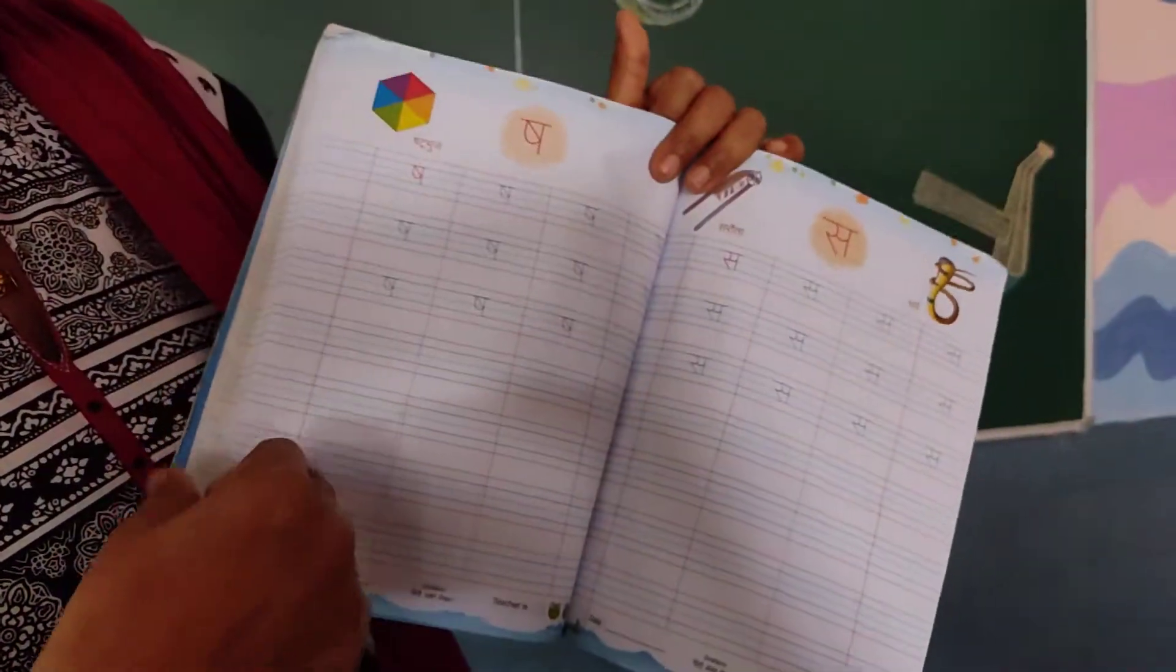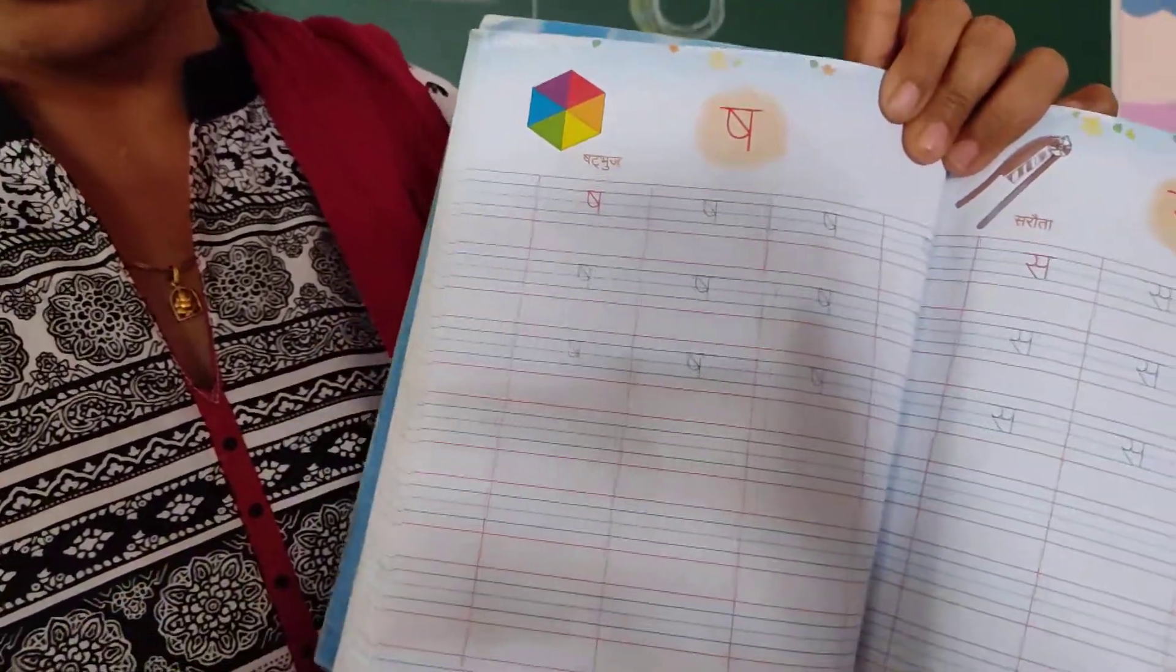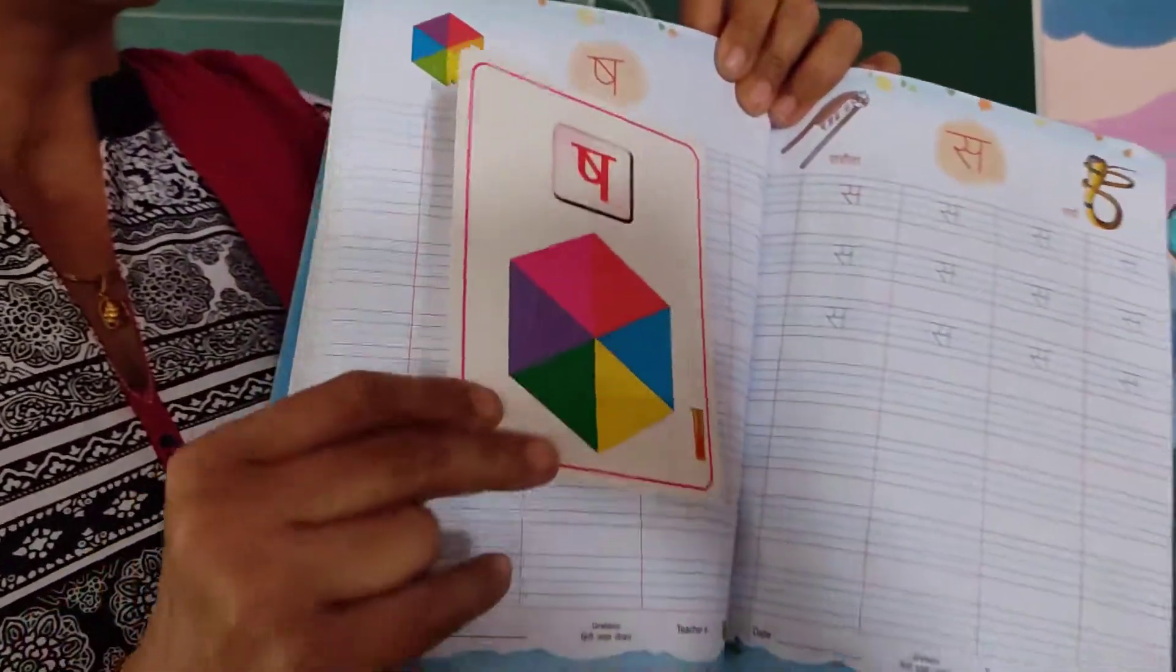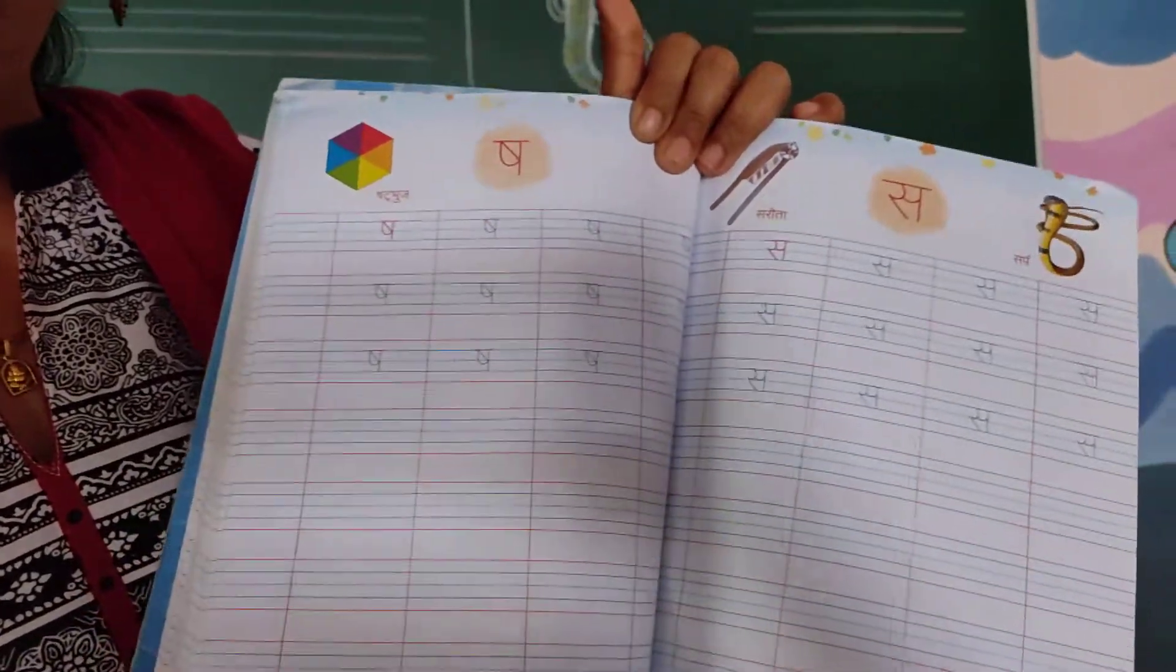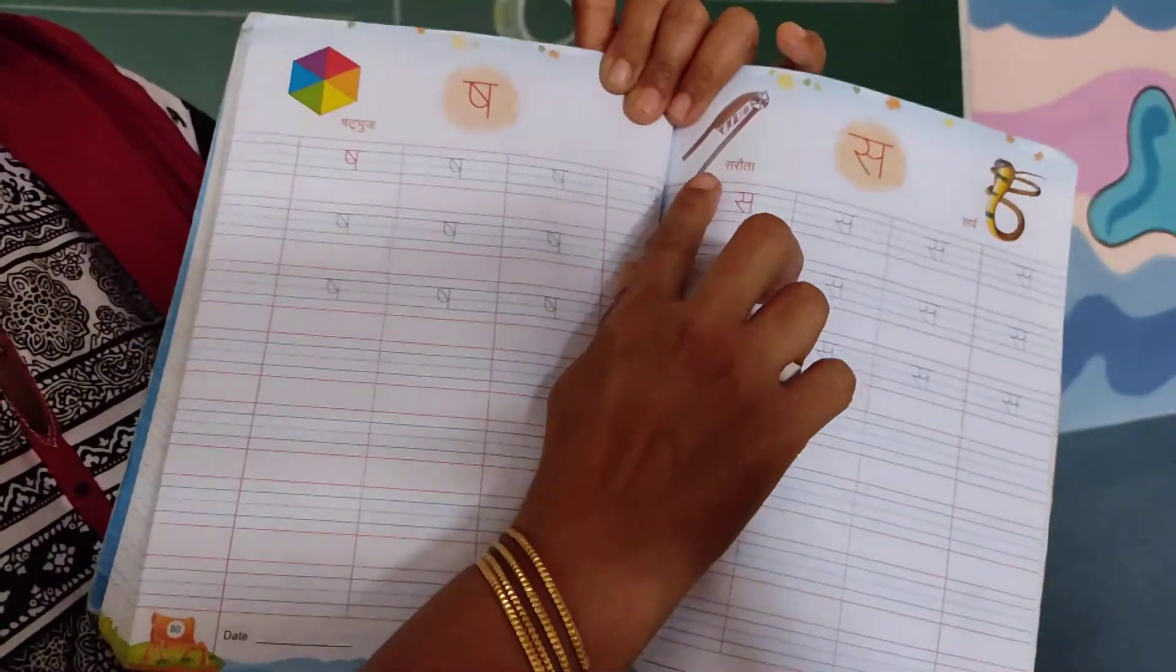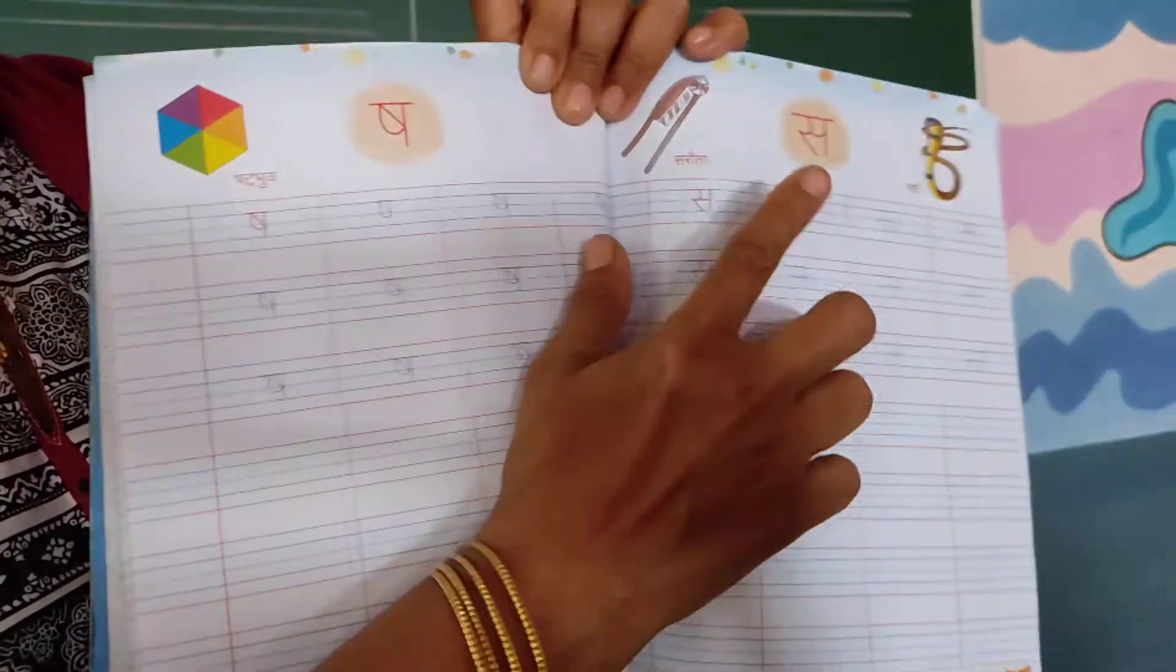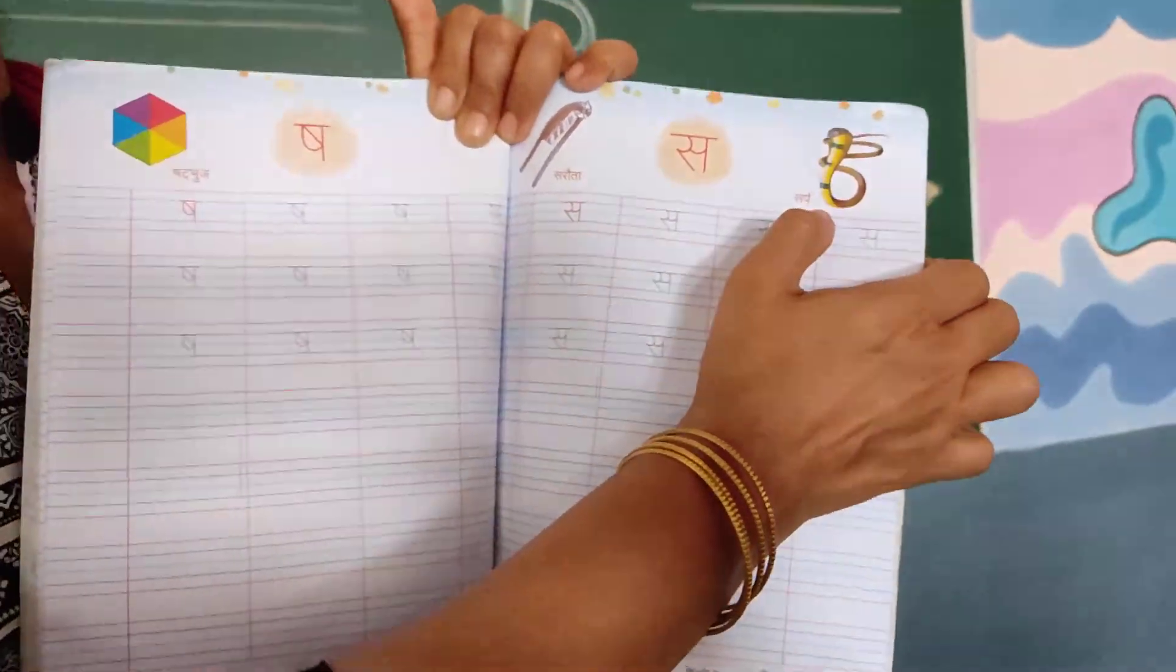Next letter is shah. Shah se shatkona. See in flash card also, shah se shatkona is there. Next, sa. Sa se sarauta. See how to pronounce this: sarauta. Next, sapeira, sorry.